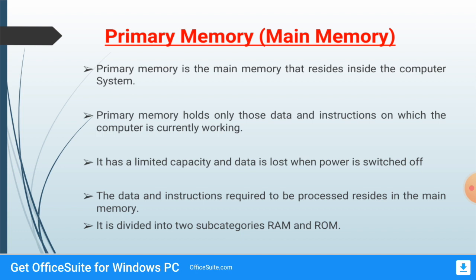Primary memory has a limited capacity and the data is lost when the power is switched off — data tab tak rehta hai jab tak computer on hai. Jaise hi computer band hua, jo data primary memory mein tha wo delete ho jaata hai. Primary memory is also fast memory. Its examples are RAM and ROM.